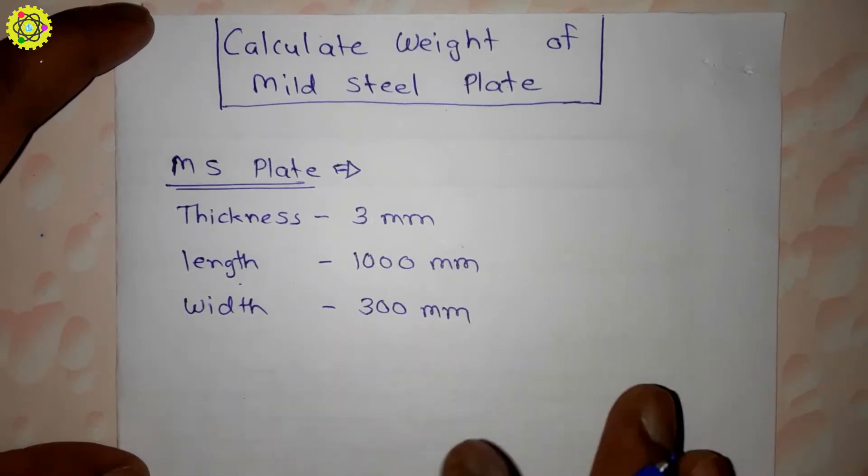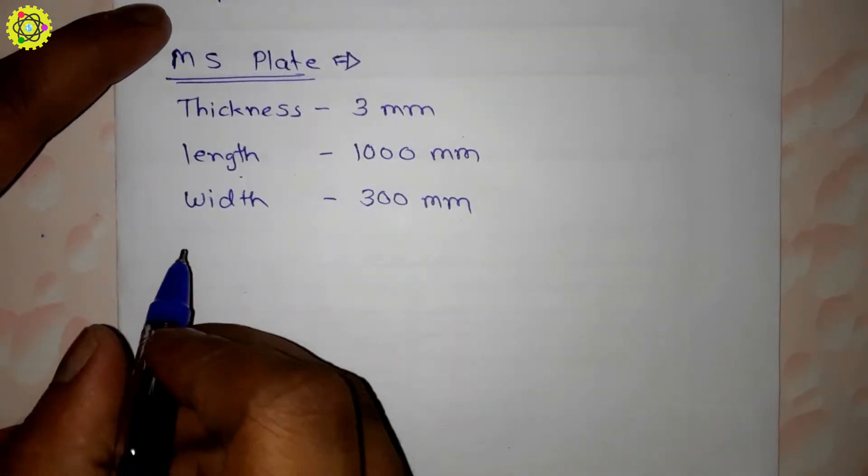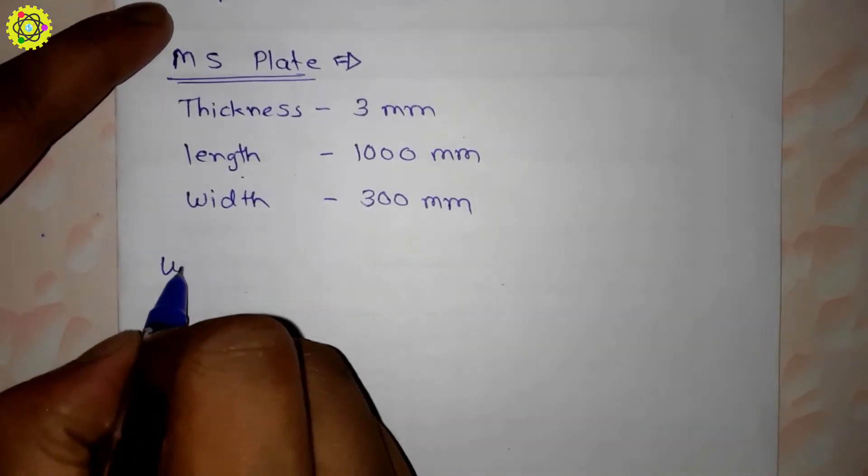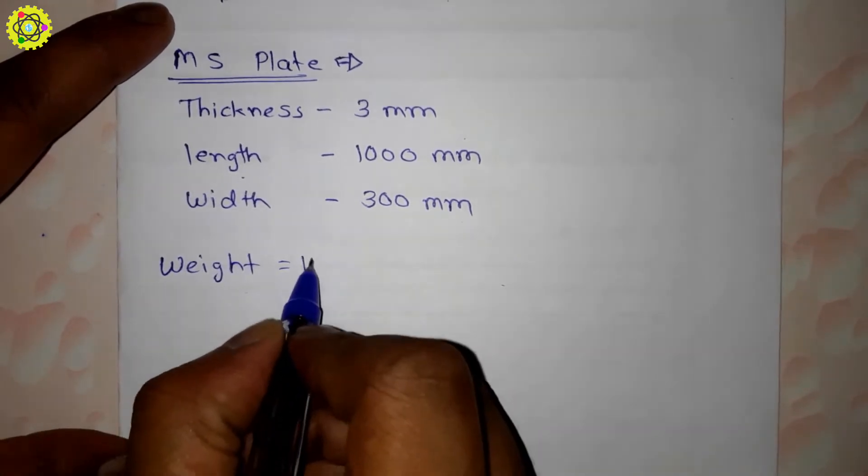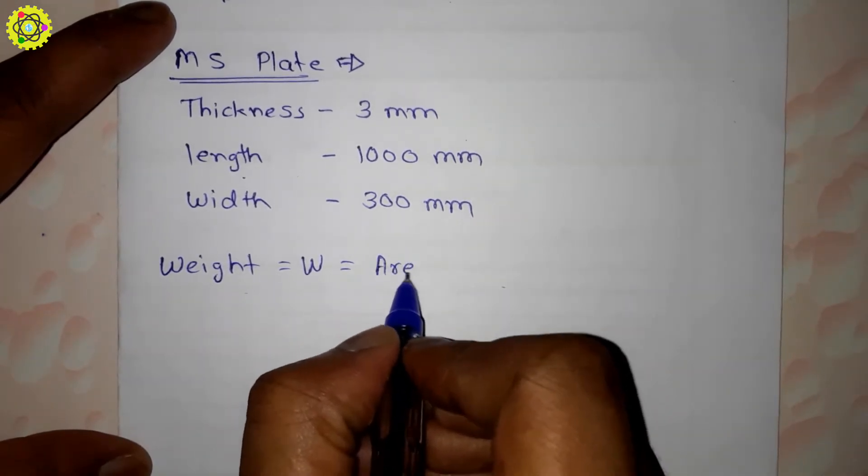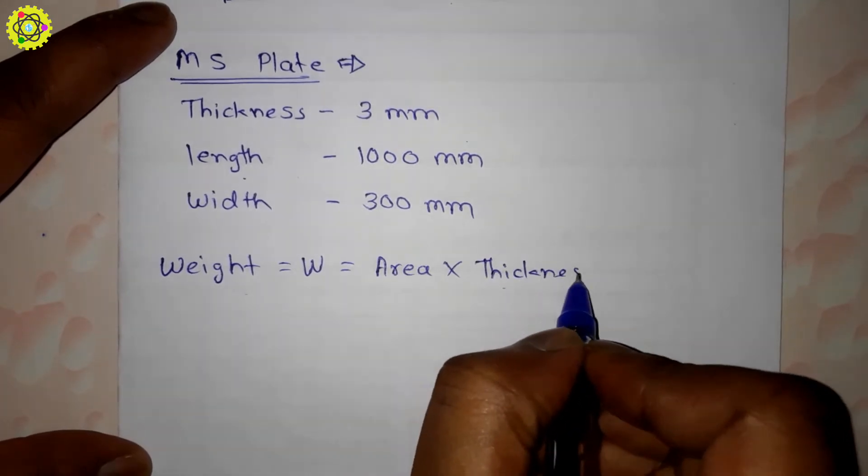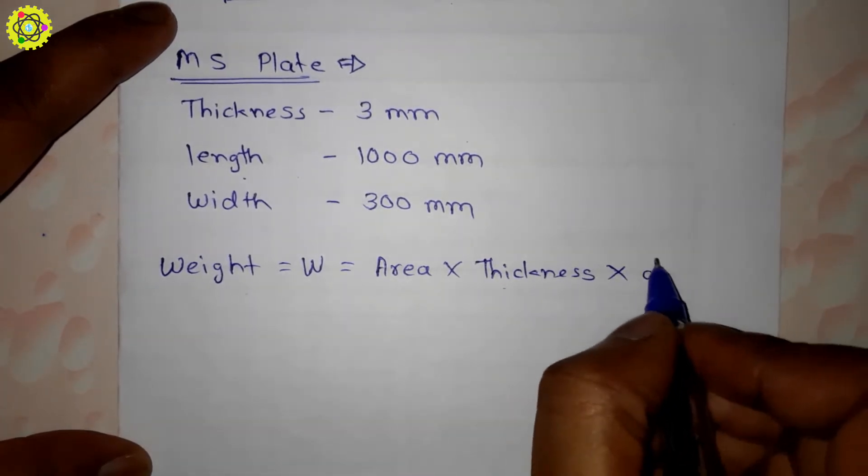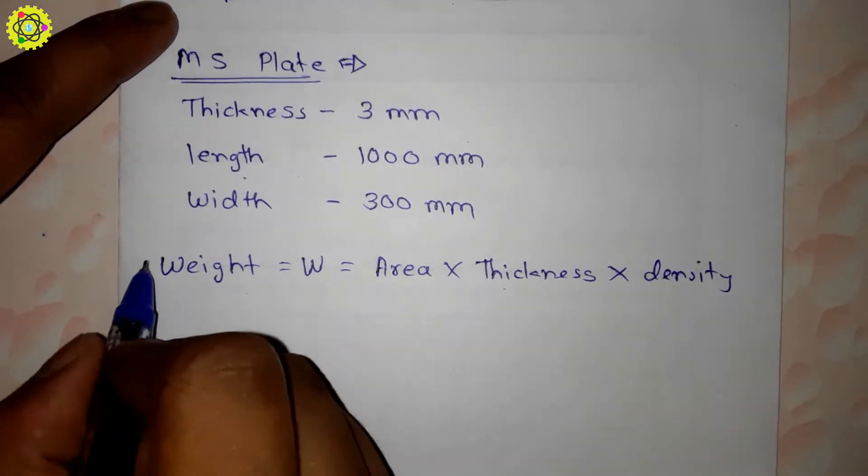For this we need a formula. Weight W is equal to area times thickness times density. This is the formula for calculating the weight of any material.